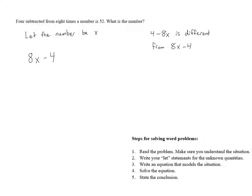Whenever we're dealing with subtraction, we know that the order matters. So we have to figure out if they're asking us for 4 minus 8x or 8x minus 4. And because they say 4 subtracted from 8 times a number, that means we're starting with 8x. And then from that quantity, we are subtracting 4. So that means it's going to be 8x minus 4.